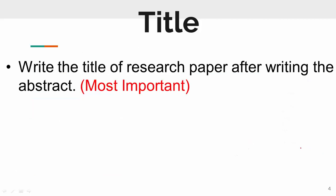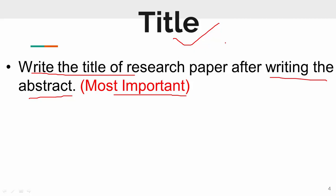Another very important point is that you should write the title of your research article after writing the abstract. In terms of the method of writing a research article, the title should be written last, once you have written all of your research article. The reason is that when you have completed your whole article, you have a clear picture of what you have talked about, and at that time it is best to write the title.